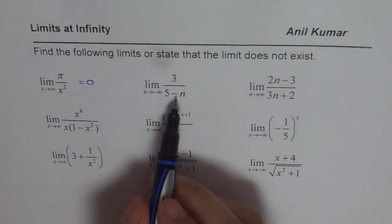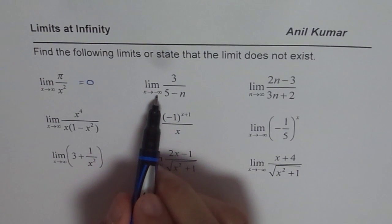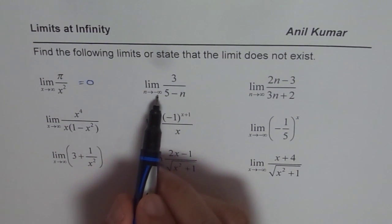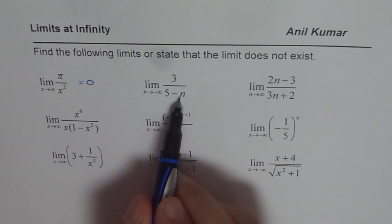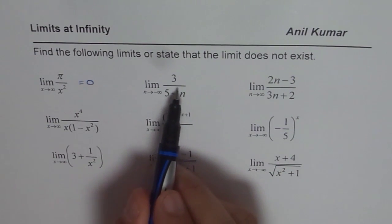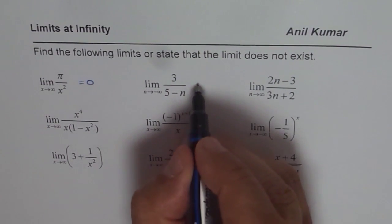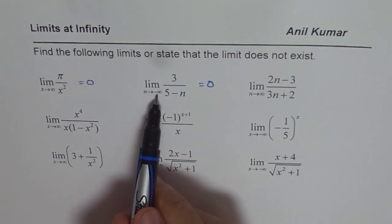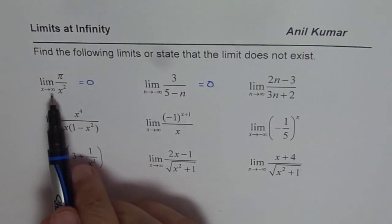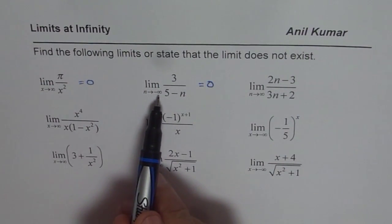In this case, n is approaching negative infinity — infinity is a large number. Whenever you divide by a positive or negative large number, you get 0. So this is also approaching 0. It does not really matter whether you are approaching negative or positive infinity.